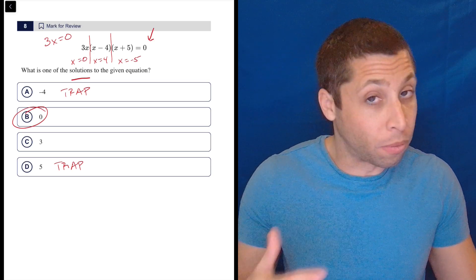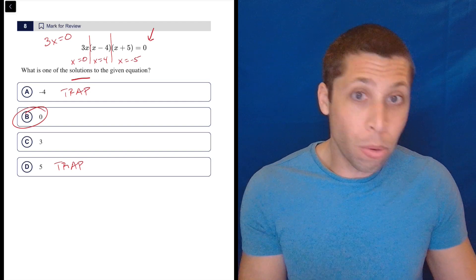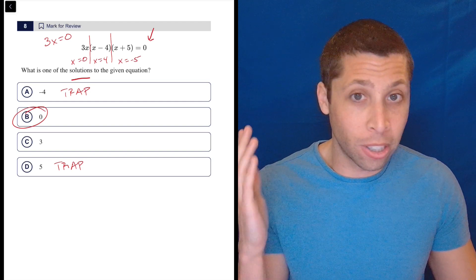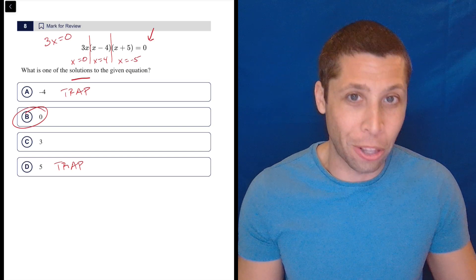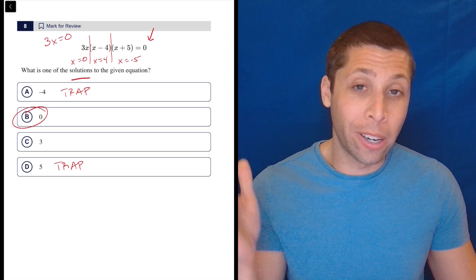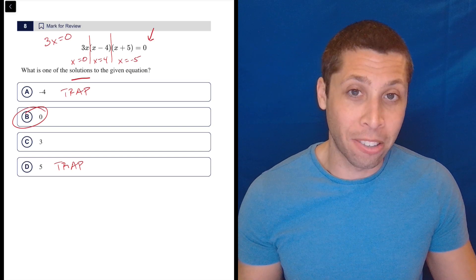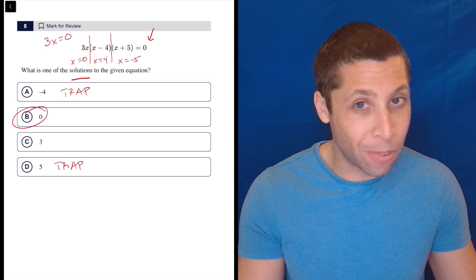However, if you were for any reason unsure, throw this in the calculator and you're going to see three lines. I'm pretty sure you'll see three lines at zero, four and negative five. And the only one that's listed as a choice is zero. So don't get this wrong.